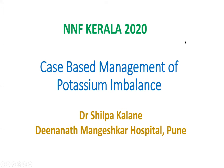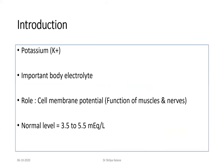Now for the last part of the module — management of potassium imbalance. Potassium is an important electrolyte, always denoted as K+, with a role in maintaining cell membrane potential, which is extremely important for normal function of vital organs — heart, brain, and muscle contractility. Normal potassium level is 3.5–5.5 mEq/L, and levels up to 6 mEq/L can be accepted in a newborn.